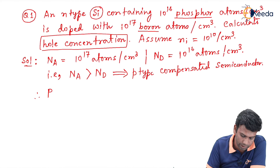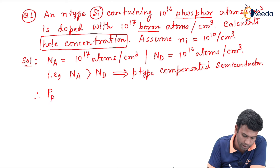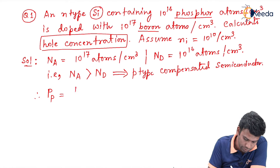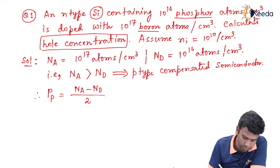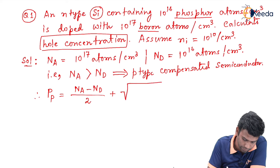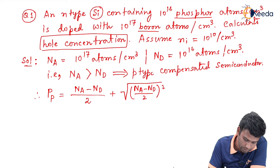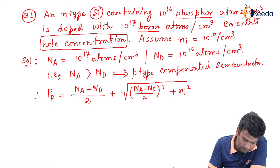The majority carrier concentration, which is the hole concentration denoted by P suffix P, is equal to (Na minus Nd) divided by 2, plus the square root of [(Na minus Nd) divided by 2] whole square, plus Ni square. We use this full equation because the Ni value has been provided in the numerical.